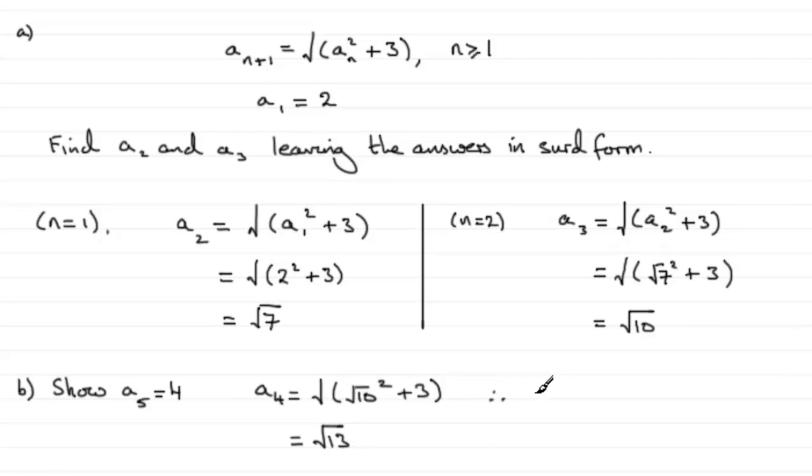So we can therefore get A5 now, when we set N equal to 4. A5 is going to be equal to the square root of A4 squared plus 3.